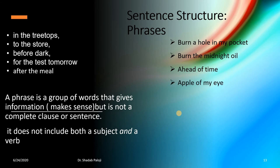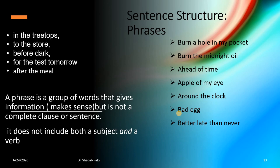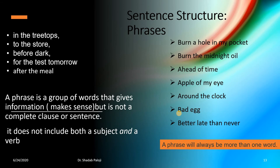Examples of phrases: 'burn a hole in my pocket,' 'burn the midnight oil,' 'ahead of time,' 'apple of my eye,' 'around the clock,' 'bad egg,' 'better late than never.' Phrases can have only two words or more than two words. Even if a phrase is not a complete sentence, it does not have to be short — it could have three, four, or more words. But if it lacks subject and predicate together or does not give complete information, we call it a phrase.